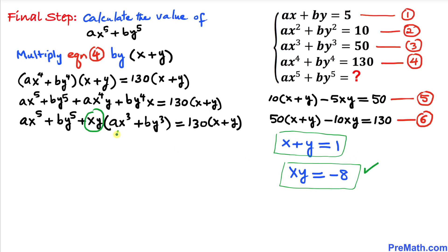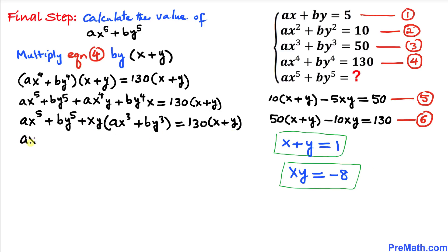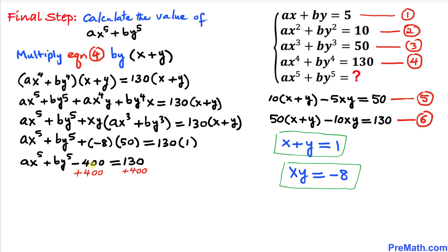Now we substitute: xy = −8, ax³ + by³ = 50, and x + y = 1. So we get ax⁵ + by⁵ + (−8)(50) = 130(1), which is ax⁵ + by⁵ − 400 = 130. Adding 400 to both sides gives ax⁵ + by⁵ = 530.